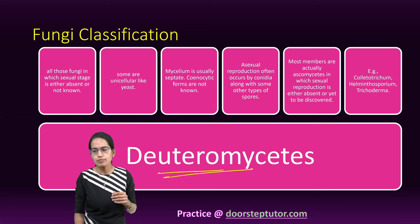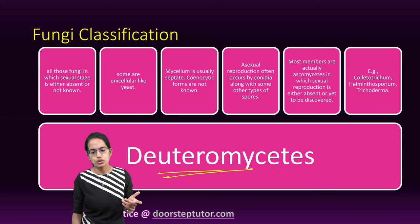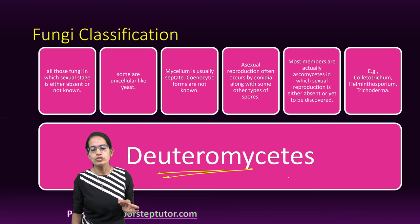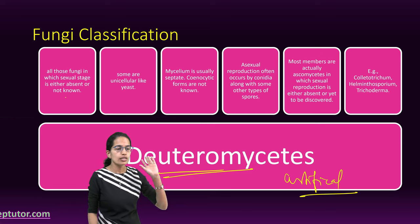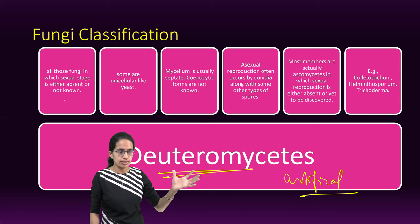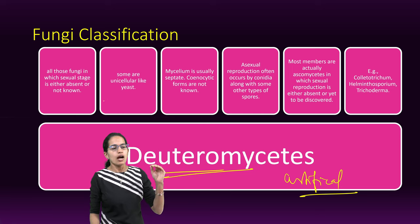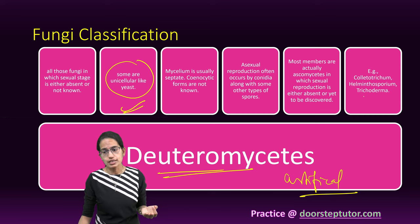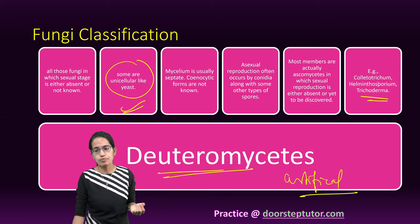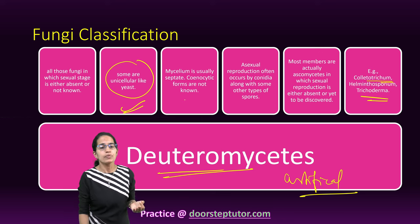The next is Deuteromycetes. As the name suggests, deutero means false or artificial fungi, and this artificial fungi has no sexual stage — the sexual stage is not present or not known. It is commonly seen in unicellular yeast and is also seen in Trichoderma and Colletotrichum.